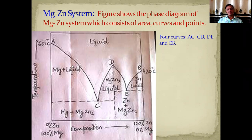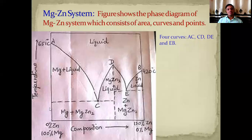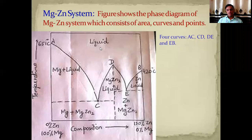On the extreme left side of this phase diagram there exists pure solid magnesium. On the right-hand side there exists pure solid zinc — 100% zinc on the extreme right and 100% magnesium on the extreme left. Above all these curves there exists a liquid state where both magnesium and zinc exist in equilibrium. Below curve AC there exists a solid magnesium state.